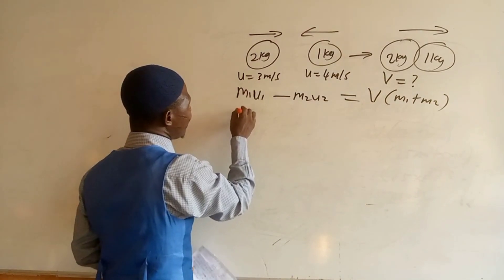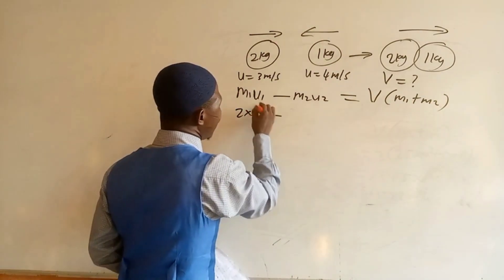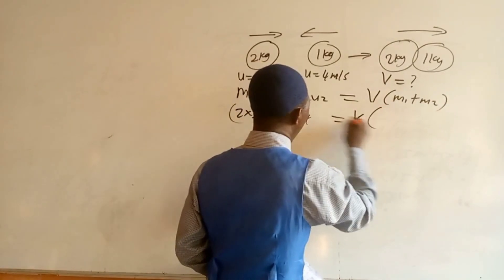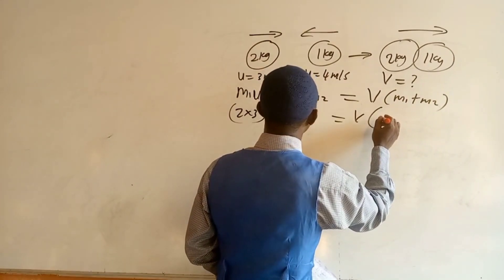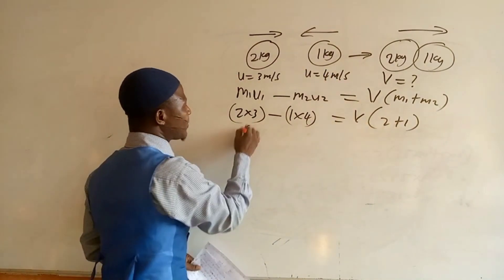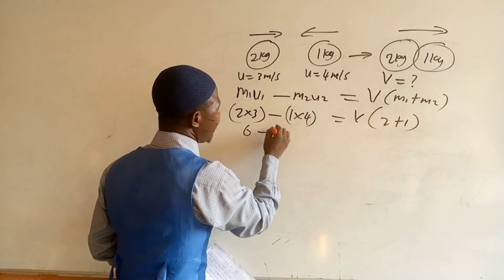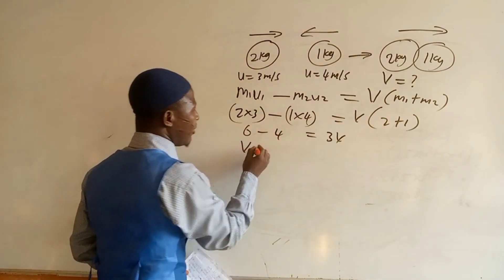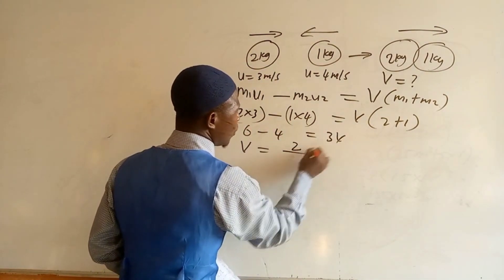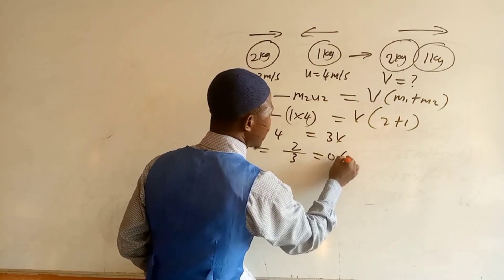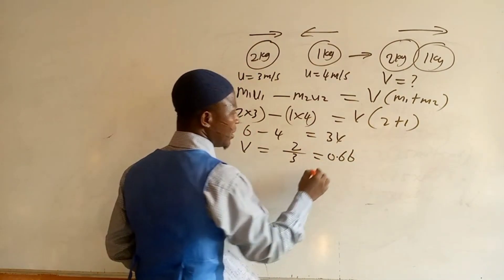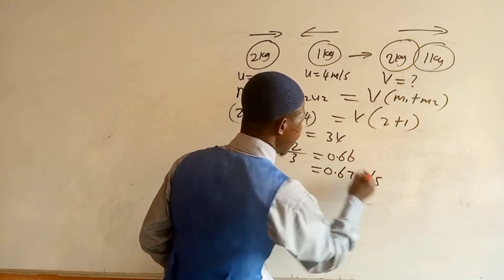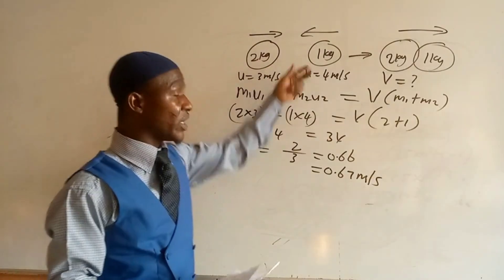Since they stick together, we substitute: 2×3 minus 1×4 equals v times (2 plus 1). So 6 minus 4 equals 3v. Therefore v equals 2 over 3, which is equal to 0.666, approximately 0.67 m/s. Once you can interpret the question and get the formula, it's straightforward. Let's use the second question.